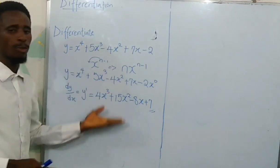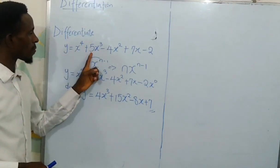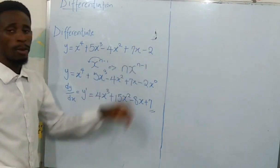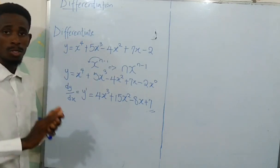If I'm asked to find the derivative of y equals x to power 4 plus 5x to power 3 minus 4x to power 2 plus 7x minus 2, what I'm going to get is this. It's a very simple and very straightforward differentiation.